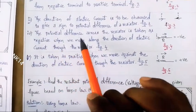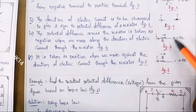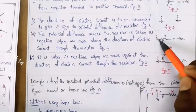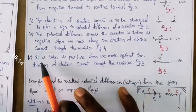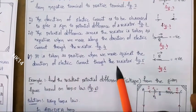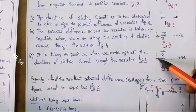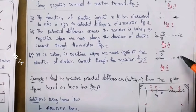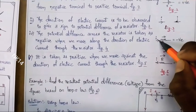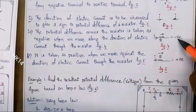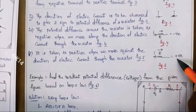The fourth point: the potential difference across the resistor is taken as negative when we move along the direction of electric current through the resistor. If the EMF across the resistor and the current direction are both in the same direction, we take it as negative voltage. The fifth point is the opposite: it is taken as positive when we move against the direction of electric current through the resistor. If the potential difference and the current direction are opposite, we take it as positive voltage.